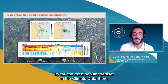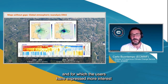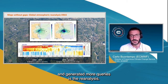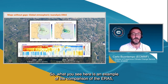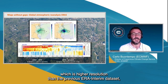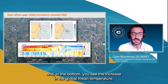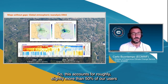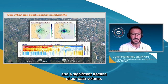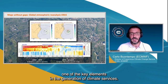By far the most popular dataset on the Climate Data Store — the one generating the most user queries — is the reanalysis: the ERA5 reanalysis from ECMWF, and in the future ERA6, as well as regional reanalysis for Europe and the Arctic. ERA5 is higher resolution than the previous ERA-Interim dataset. An example shown here is ERA5 reproducing a tropical cyclone over North America, and the bottom panel shows the increase in global mean temperature, especially in the troposphere, as seen by the reanalysis system. Reanalysis accounts for roughly slightly more than 50% of users and a significant fraction of data volume, and represents one of the key elements in the generation of climate services.